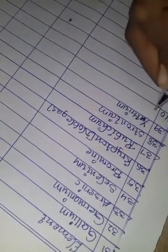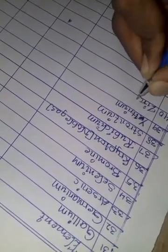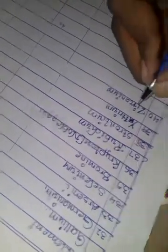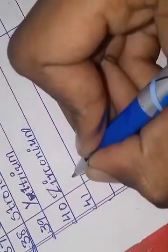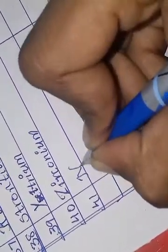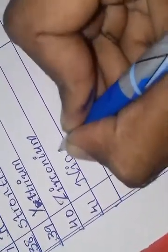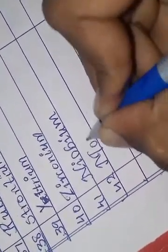The 40th element is zirconium. The 41st element is niobium. The 42nd element is molybdenum. The 43rd element is technetium.